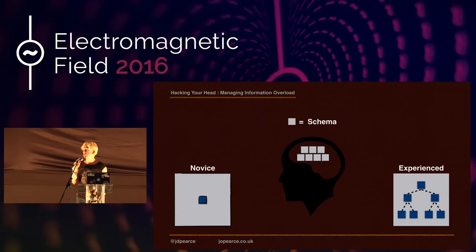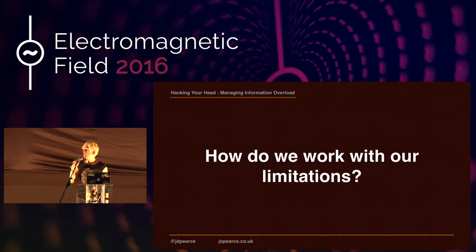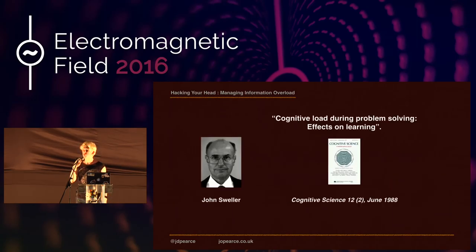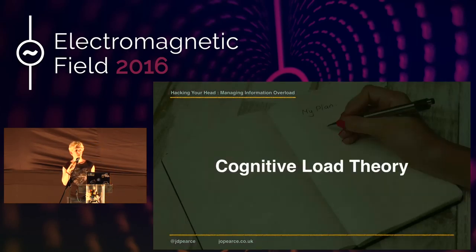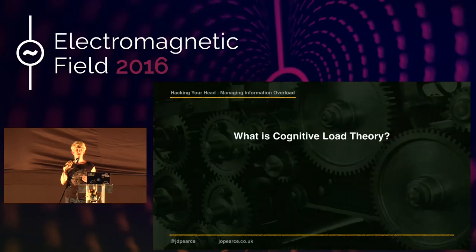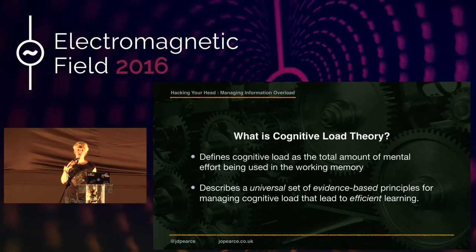In the late 1980s, John Sweller, an Australian educational psychologist, asked what we can do to learn more efficiently given the limitations Miller wrote about. His research led to cognitive load theory, which very simply defines cognitive load as the total amount of mental effort being used in the working memory, and describes a universal set of evidence-based principles for managing that cognitive load that lead to more efficient learning.